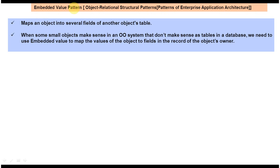The first point is: it maps an object into several fields of another object's table. The second point is: when some small object makes sense in our system but doesn't make sense as a table in the database, we need to use Embedded Value to map the values of the object to fields in the record of the object's owner.